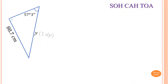Next question: find the value of Y correct to one decimal place. Angle 57 degrees 3 minutes is given. The opposite of this angle is given, so we label it O. Y is the longer side, which is opposite the right angle — that's how you identify the hypotenuse.